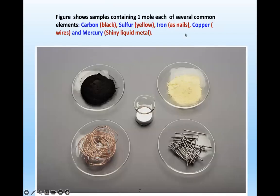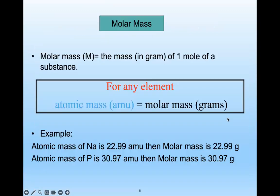This figure shows a sample containing one mole of several common elements: the black one is carbon, yellow is sulfur, iron appears as nails, and copper as wires — different shapes but each is one mole. For any element, the atomic mass in amu equals the molar mass in grams. For example, sodium's atomic mass is about 23 and phosphorus is about 31 — atomic mass unit equals molar mass in grams.